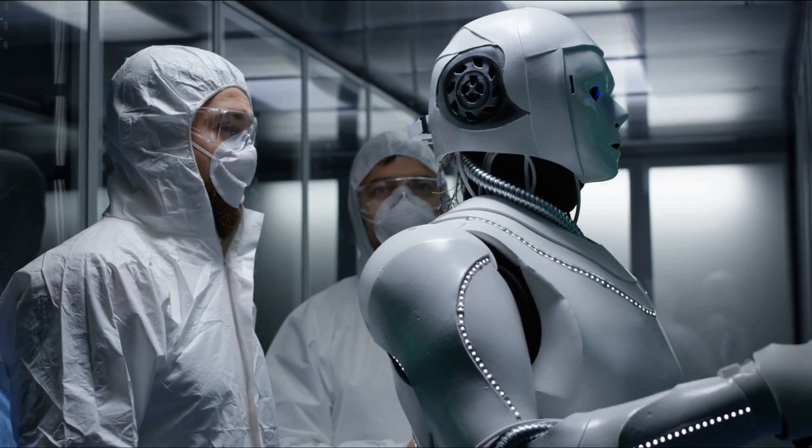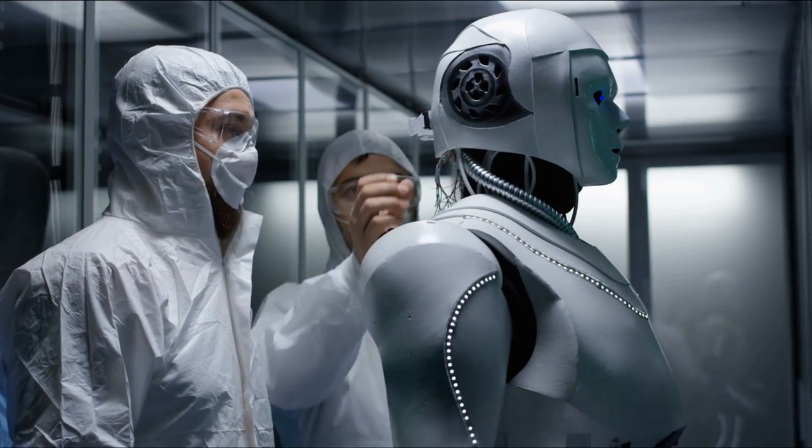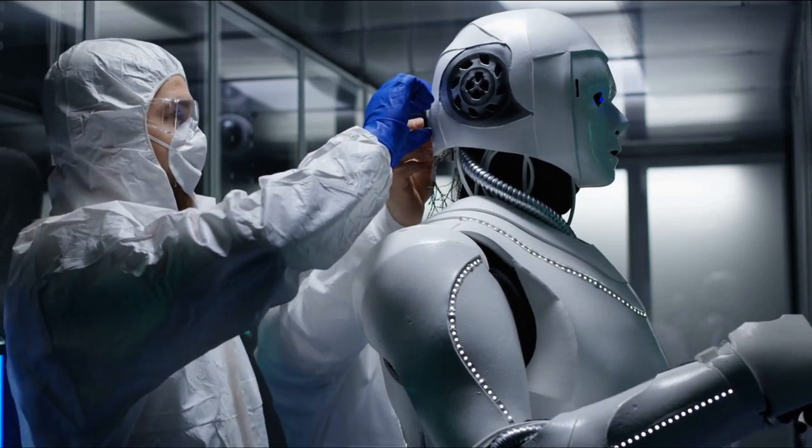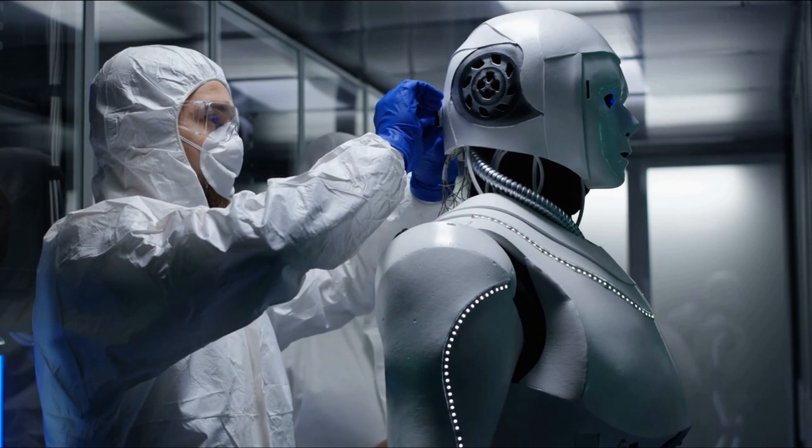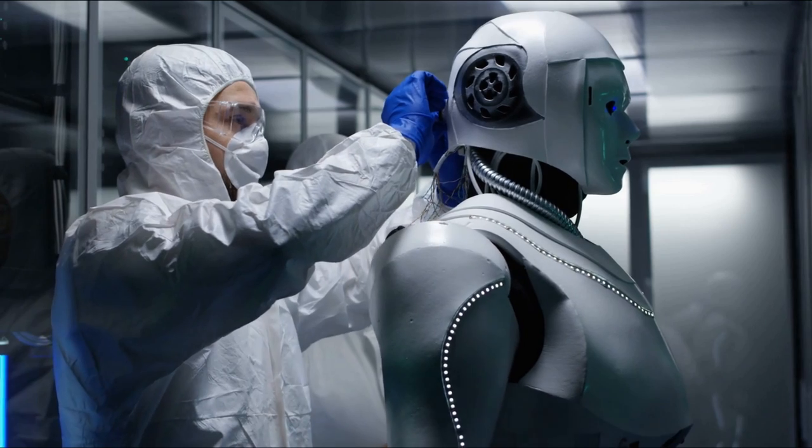Even if we instill our AI with a real unhealthy aversion to harming others, not just an override or a fear of consequences, how do we factory test its reliability? Even people whose natural aversion to violence is strong can be pushed to overcome it. One thing you can do with AIs that you can't really do with people is run them through a vast number of simulations before releasing them into the world.